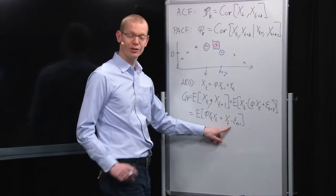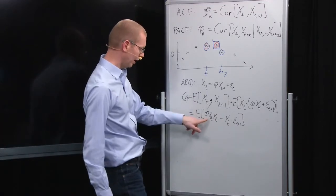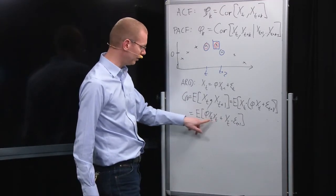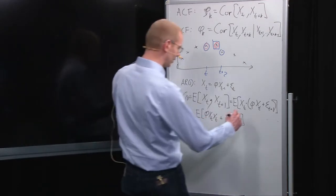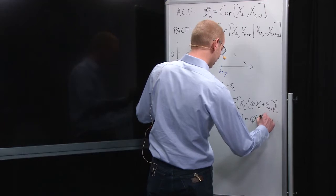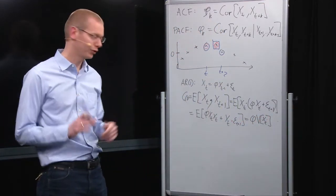The last part out here is 0 because the future epsilon has not influenced x t yet, and what we're left with is this, where x t times x t, that's the variance, so what comes out here is phi times the variance of x t, or just phi if you're looking for the correlation structure.